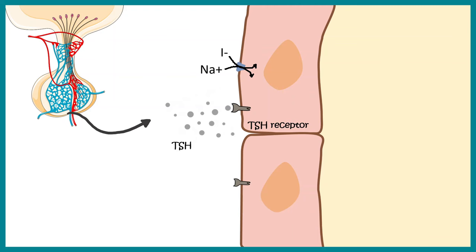First, thyroid hormone production requires iodine. Iodine has to get into the thyroid colloid with the help of specific transporters — it is co-transported with sodium. Once iodine moves into the colloid, the enzyme thyroperoxidase along with hydrogen peroxide converts the iodine into its molecular form, I₂.